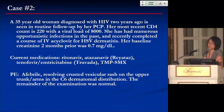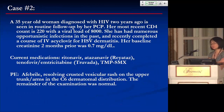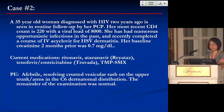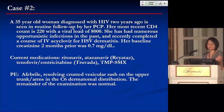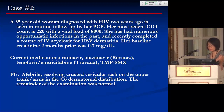Case two is a 35-year-old female diagnosed with HIV about two years ago, seen in routine follow-up with a CD4 count of 220 and viral load of 8,000. She has had numerous opportunistic infections and recently completed a course of IV acyclovir for HSV dermatitis. Her baseline creatinine two months ago was 0.7. Current medications include ritonavir, atazanavir, tenofovir, emtricitabine combination, and Bactrim.